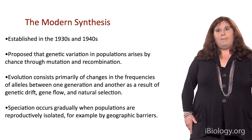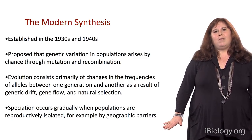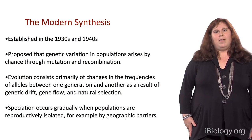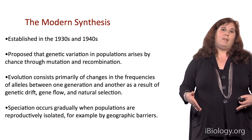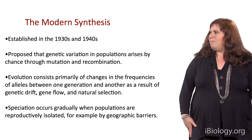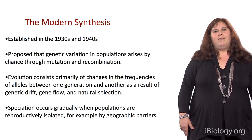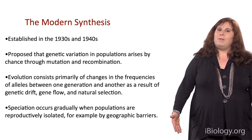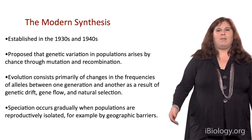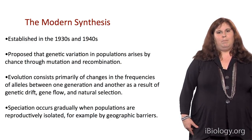When Darwin first came up with this theory of natural selection, there was really no concept of genetics as we know it today. It wasn't until the late 1800s that Mendel proposed his theory of genetics. Then in the 1930s and 40s, there was a synthesis of natural selection, genetics, and mathematical population genetics. At that time, it was proposed that genetic variation in populations arises by chance through mutation and recombination, that evolution consists primarily of changes in the frequencies of alleles between generations, largely as a result of genetic drift, gene flow, and natural selection, and that speciation occurs gradually when populations are reproductively isolated, for example by geographic barriers.